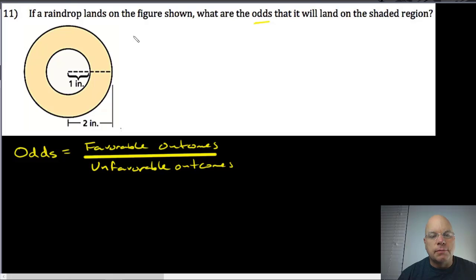So if we take this definition and turn it into a ratio using the areas of the shaded region and the unshaded region, the odds would be area of the shaded region. Those would be our favorable outcomes because that's where we want the raindrop to land. The unfavorable outcomes would be area of the unshaded region.